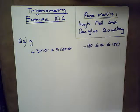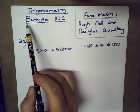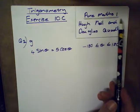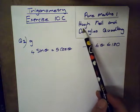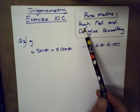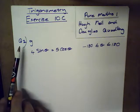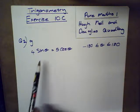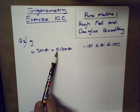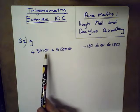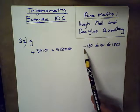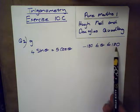Good afternoon ladies and gents. Today we are going to focus on a little bit of trigonometry and we are going to look at Exercise 10c from the Pure Maths 1 textbook by Hugh Neal and Douglas Kwadling. The exercise we're looking at is Question 2g, which is: 4 sine theta equals 5 cosine theta. They ask us to find all the possible values of theta for the interval negative 180 degrees to 280 degrees.